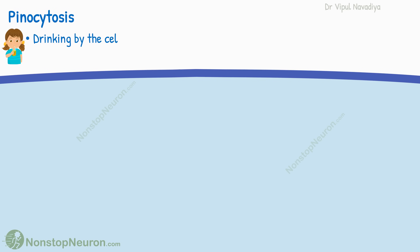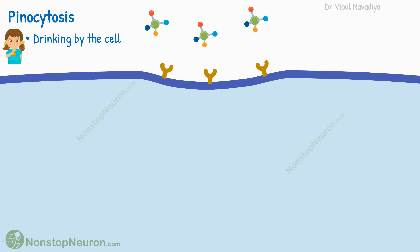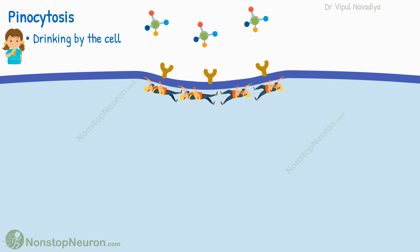Pinocytosis means drinking by the cell. It occurs to take in macromolecules. The cell expresses receptors for such molecules on the membrane. Such receptors are generally concentrated in a small pit on the membrane called a coated pit. Beneath this pit, on the inner side of the cell, there is a latticework of fibrillar proteins called clathrin and other proteins like contractile filaments, actin and myosin. All these proteins drive the movement of the cell membrane during endocytosis.